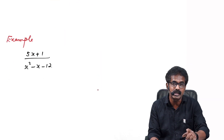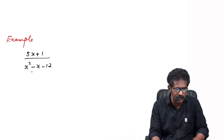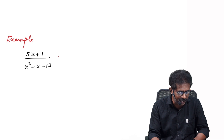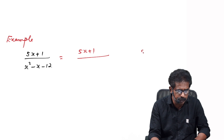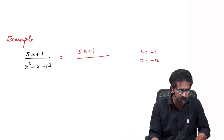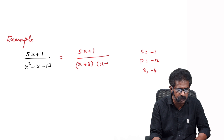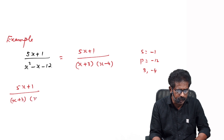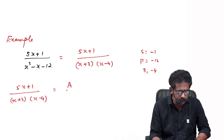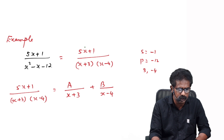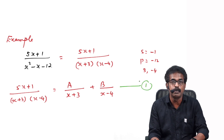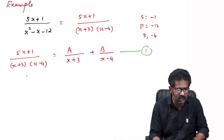Let me explain with an example — the same one we started with: 5x+1 over x²−x−12. First step: factorize the denominator. The sum is −1 and product is −12, giving factors 3 and −4, so the denominator is (x+3)(x−4). We write 5x+1 over (x+3)(x−4) as A/(x+3) plus B/(x−4). We need to find the two unknowns A and B.